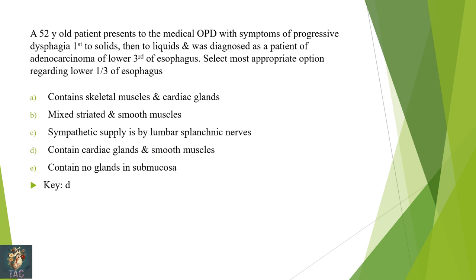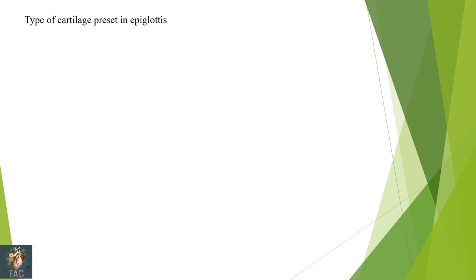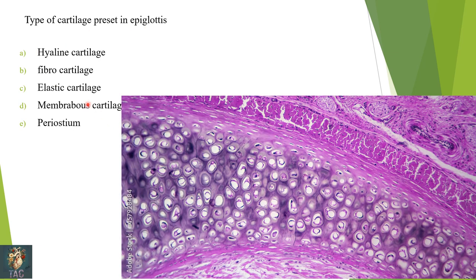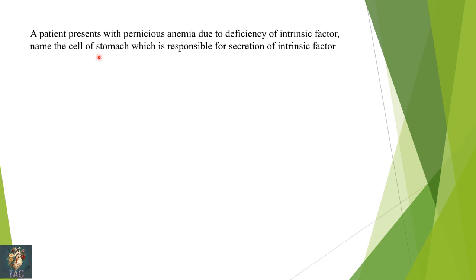Next: what type of cartilage is present in the epiglottis? Options include hyaline cartilage, fibroelastic membrane, and periosteum. Easy to remember: E for epiglottis and E for elastic cartilage. Elastic cartilage is present in the core of the epiglottis. This question appeared in internal exams of some medical colleges. Correct option is C.